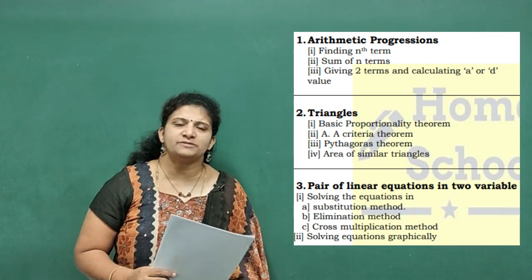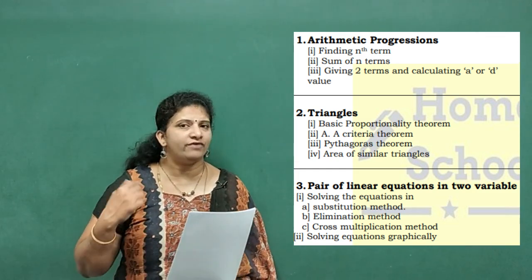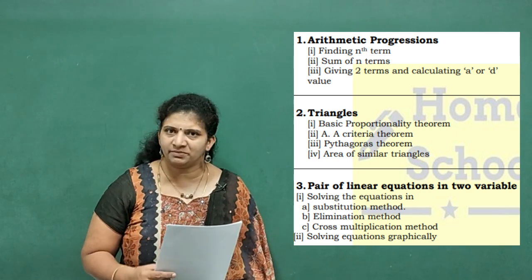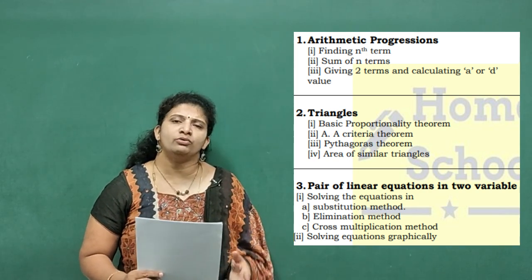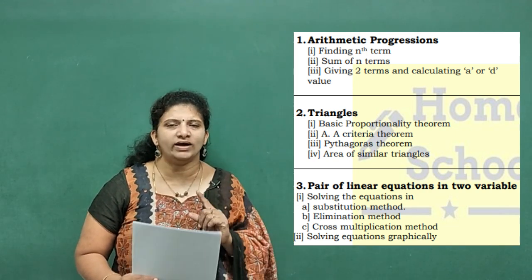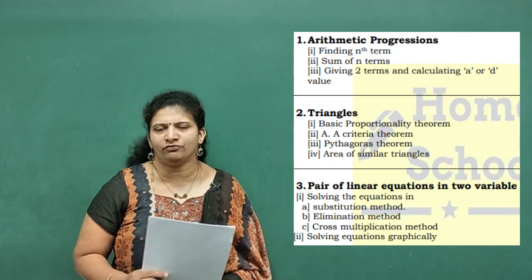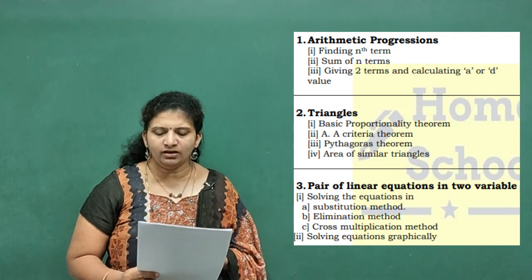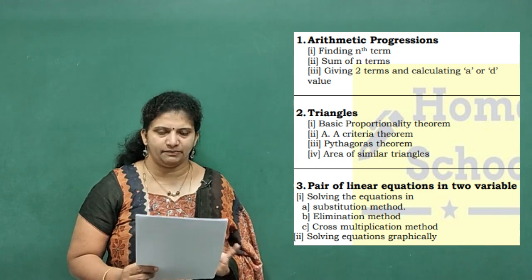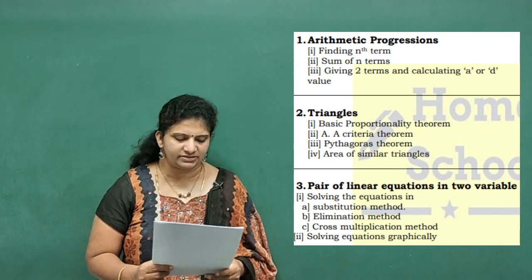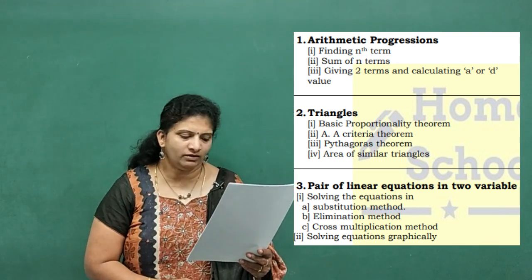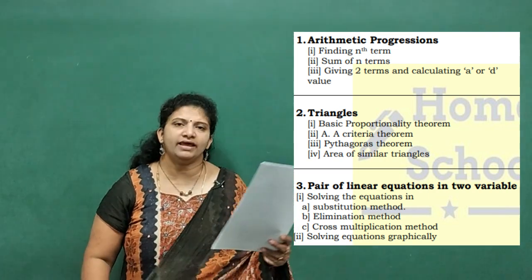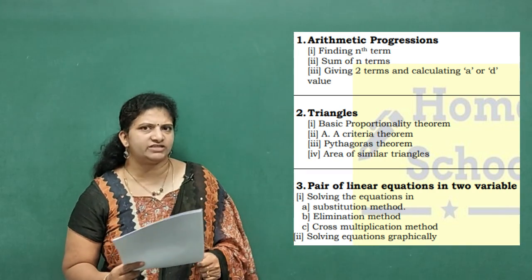Coming to the next chapter — Triangles. In this we can expect one five-marks theorem, or a four-marks theorem, or one mark for the statement of any theorem. Minimum I have taken four marks here. Coming to the third chapter — Pair of Linear Equations in Two Variables. The most expected questions are solving the linear equation by substitution method, elimination method, cross multiplication method, or graphical method.